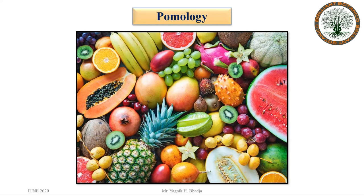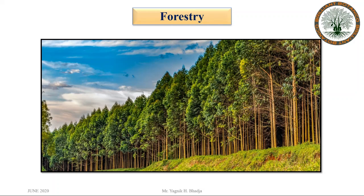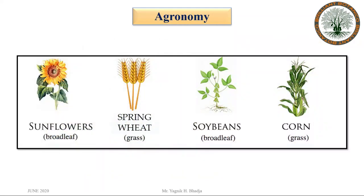Another branch is pomology, in which we study cultivated fruits. Another branch is forestry — the science of managing forests, plantations, and related natural resources. Another branch is agronomy, which is the science dealing with crop plants.